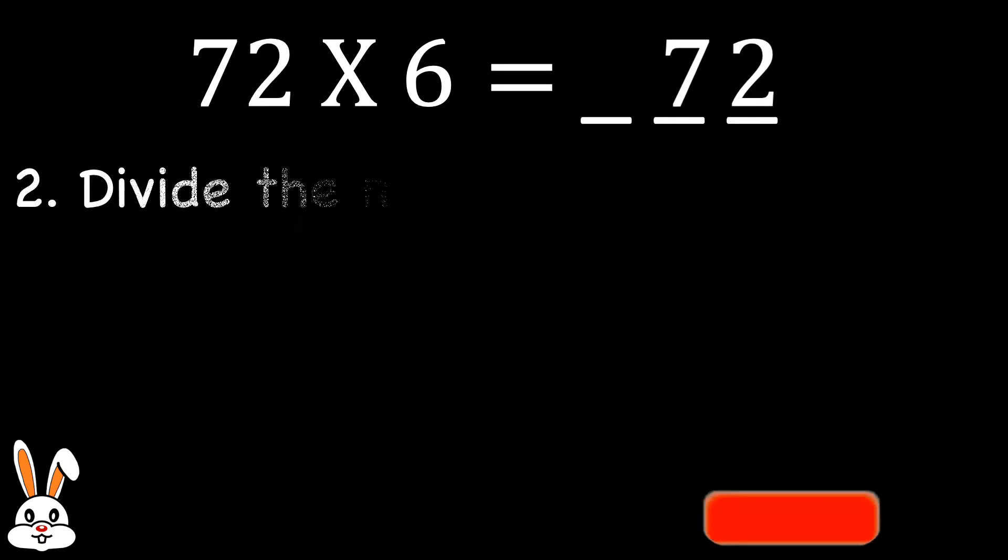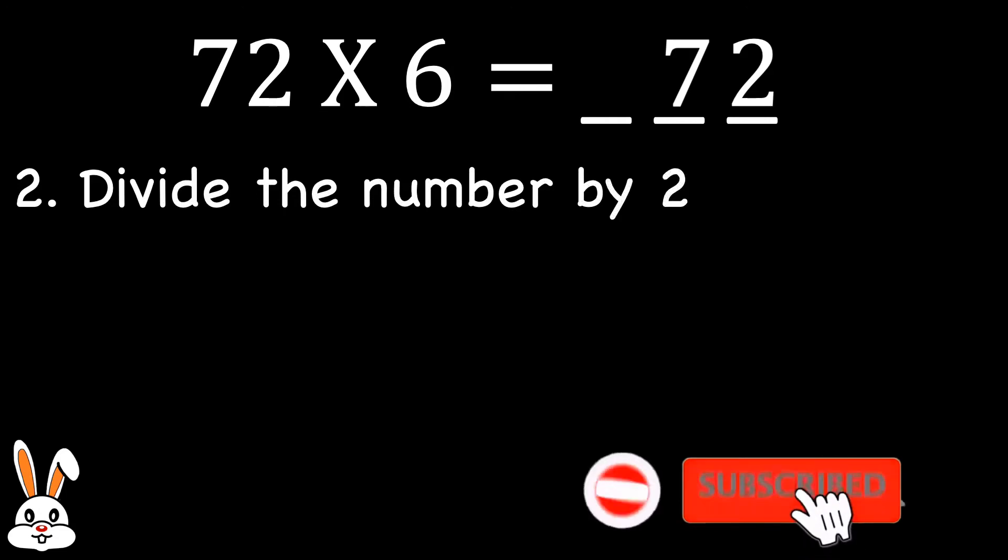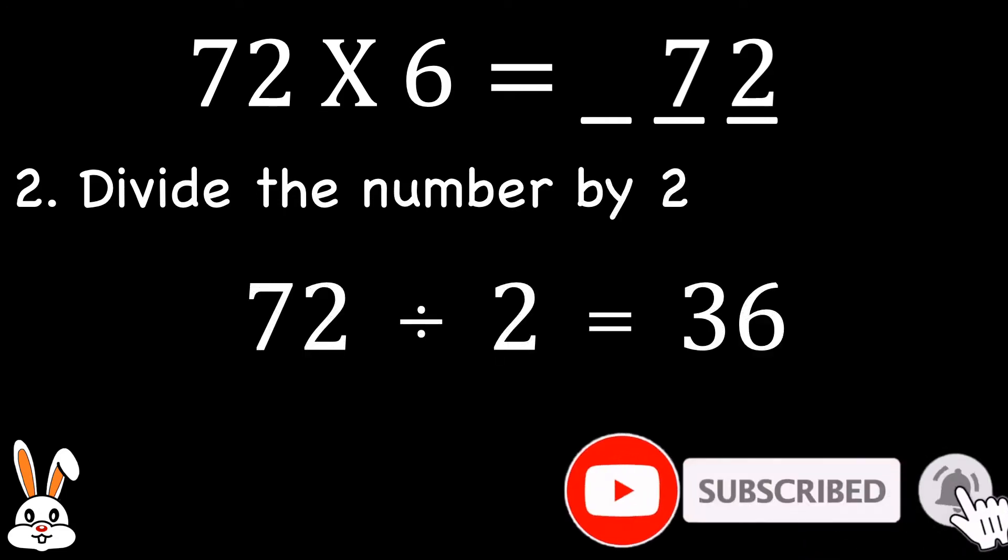For step 2, we divide this number by 2. So 72 divided by 2 gives us 36.